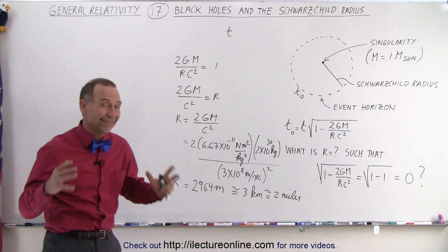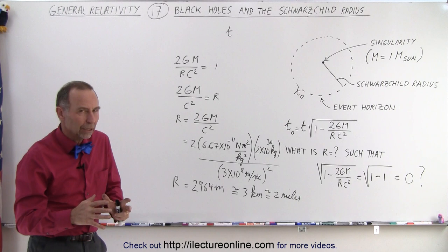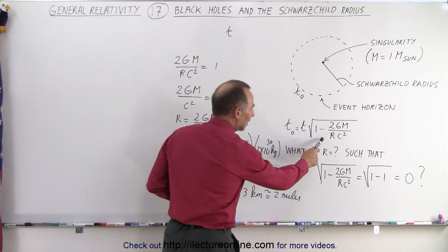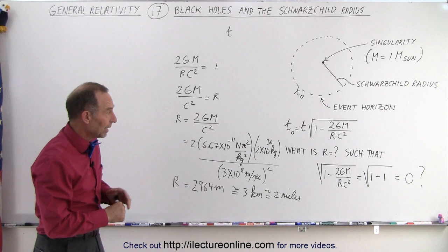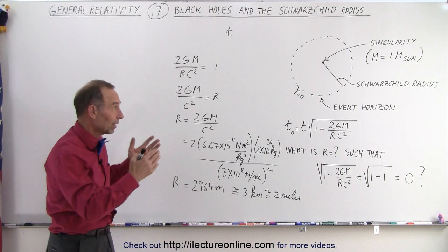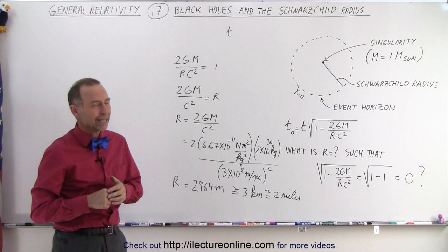First of all, of the existence, the probable existence of black holes and the size of that event horizon from within nothing could escape. And this is how it came about from that equation that had been proven to be correct based upon the precession velocity of Mercury, and then using the equation to calculate the time effect of the gravitational force of something as powerful as a black hole, and out came the Schwarzschild radius.